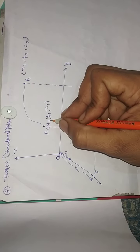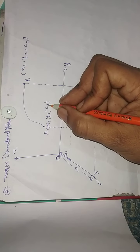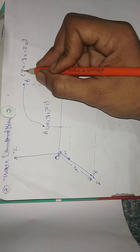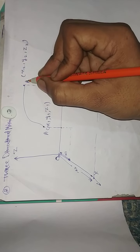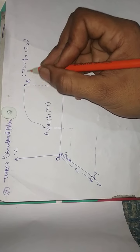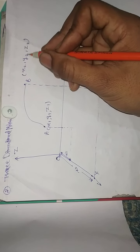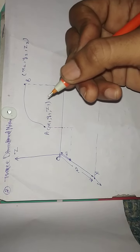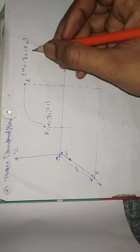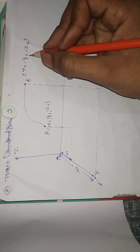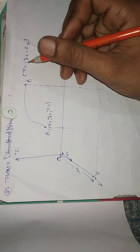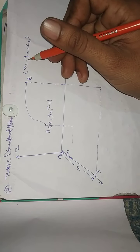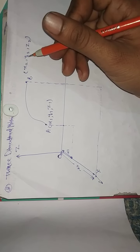If your particle was at position A with coordinates x1, y1, and z1, and it reaches point B with coordinates x2, y2, z2, then x, y, and z — all three coordinates — change. This type of motion is called three dimensional motion, or 3D motion.